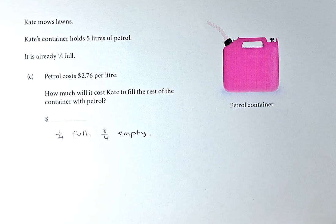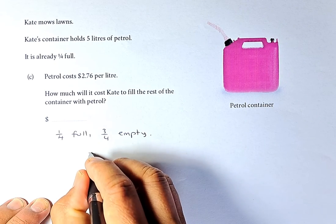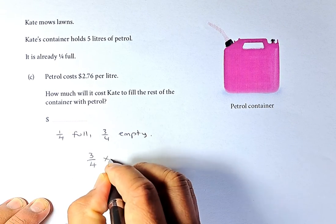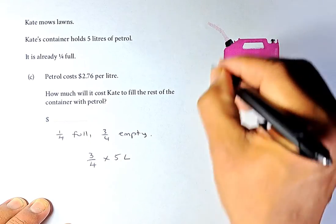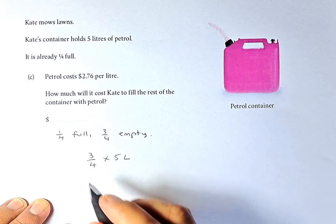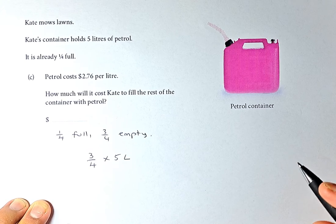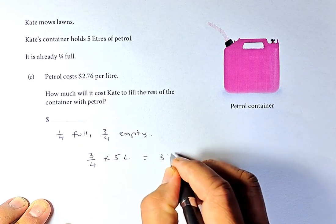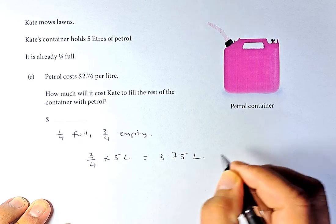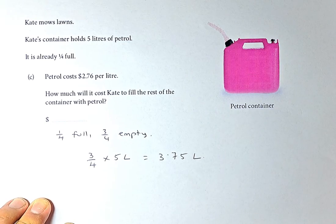To fill up the three quarters, we're going to take three quarters, multiply by five litres because the whole container is five litres. You need to fill up three quarters. Calculate that, it's going to be 3.75 litres of petrol into the container.